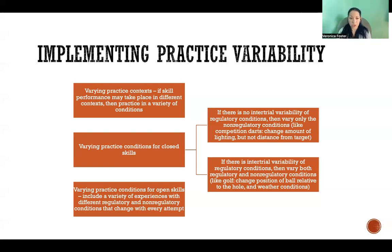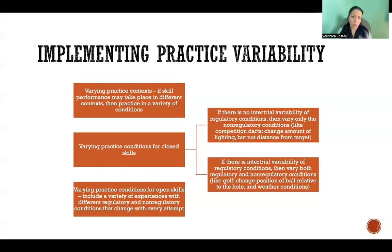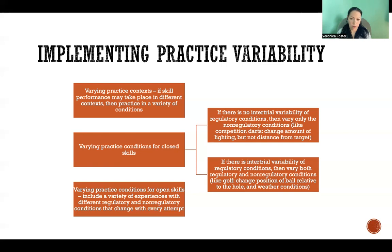In that kind of situation, the conditions you would vary are the non-regulatory conditions — those that don't directly affect your ability to complete the skill. For example, changing the weight of the dart would really change how you perform the skill, but changing the amount of lighting in the room is a non-regulatory condition. It changes the context and environment a little bit without changing the movement or the implementation of the skill itself.